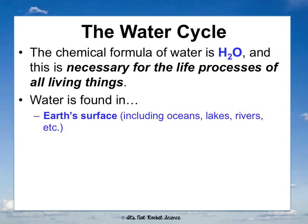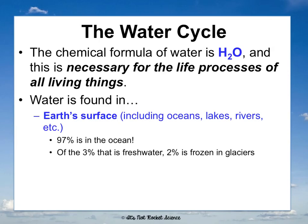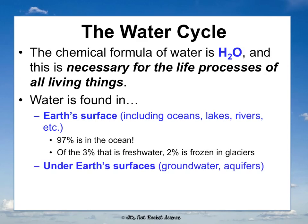Water is found on Earth's surface — in oceans, lakes, rivers, puddles. 97% is in the ocean. Of the 3% that is fresh water, 2% of that is frozen in glaciers, so we really only have access to about 1% of fresh water. There's also water under the Earth's surface in groundwater, and aquifers are where water builds up underground. Water vapor is also found in the atmosphere.